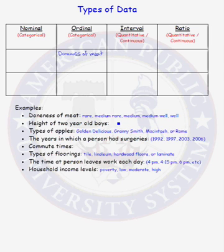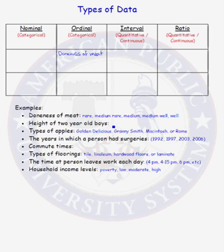Our second data type is the height of two-year-old boys. Is there a natural ordering to height? Yes, we can order heights from low to high. Can we take differences of heights of two different boys? Yes. And does it make sense that one boy is one and a half times taller than another boy? Yes. That makes height a ratio type of data.